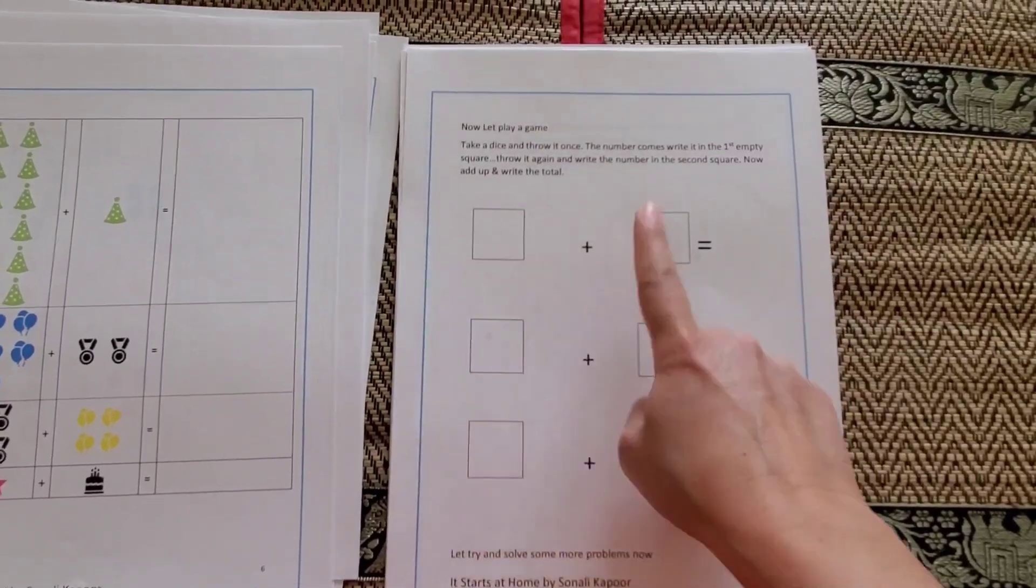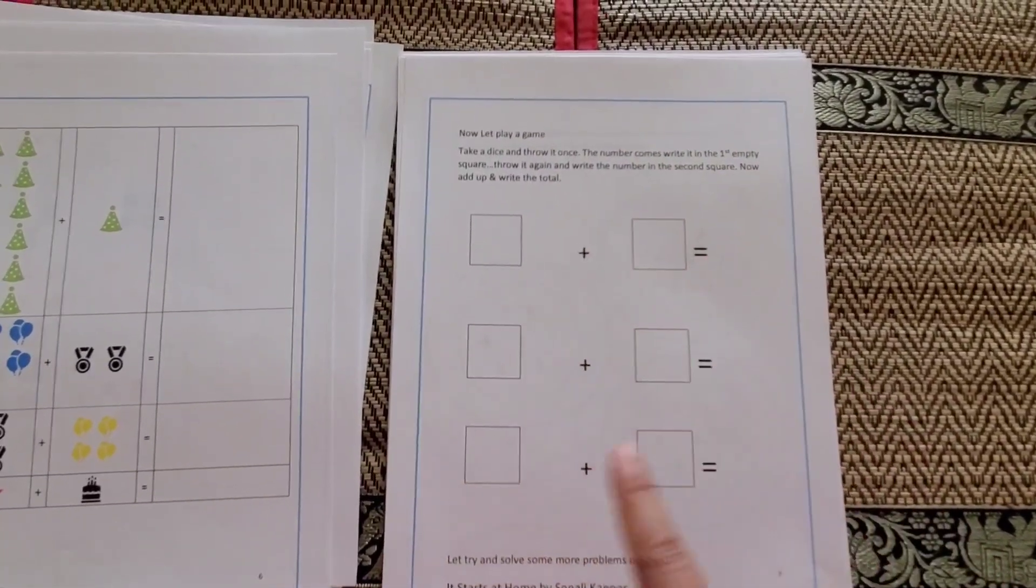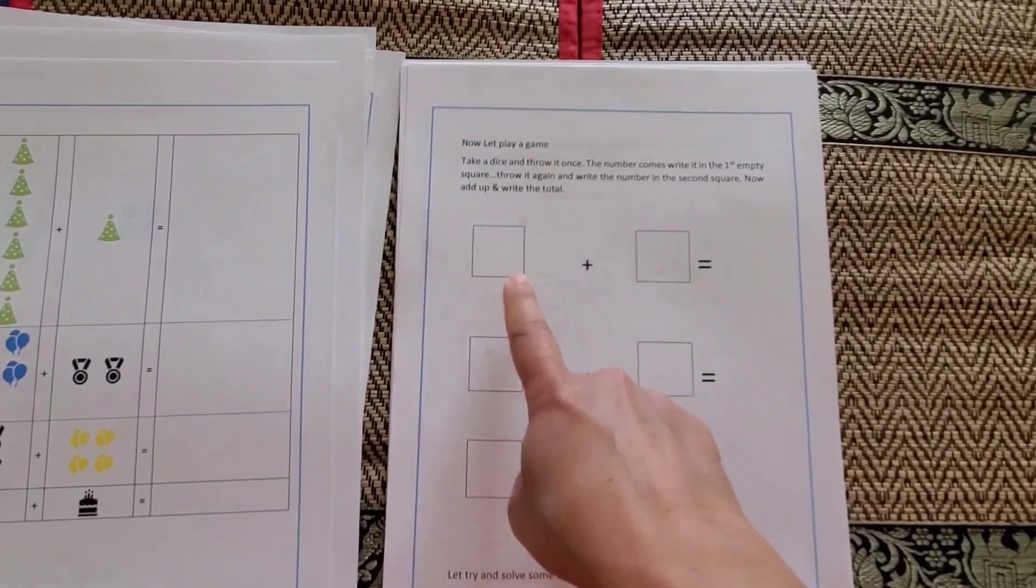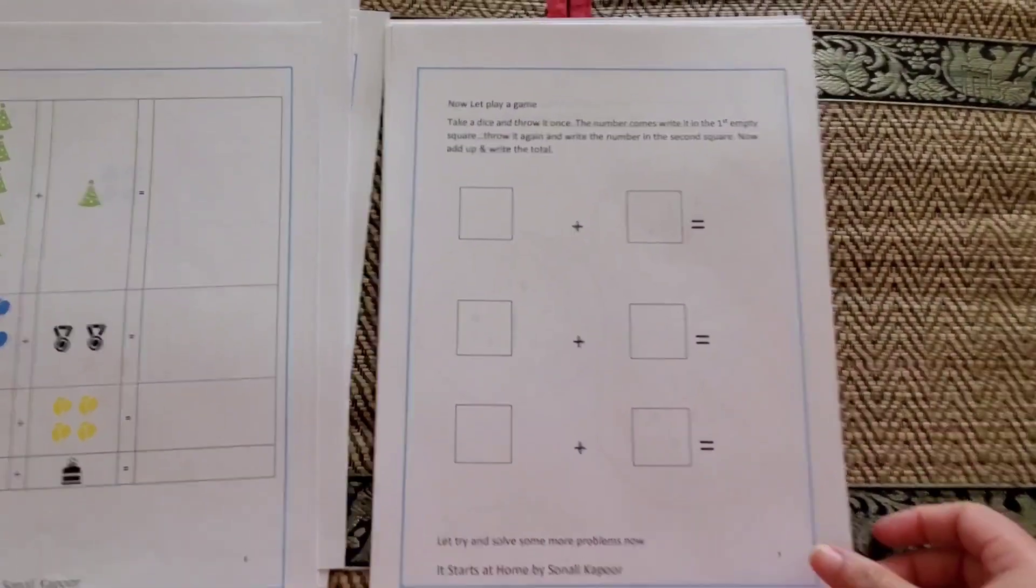Now this one is for the rolling the dice game. So whatever number comes in, you put here, and you roll the dice one more time, it comes in here, and then you add up. But this can also be used for one digit, two digit, three digit, or four digit - it depends on totally where your child is and what you want to do exactly.